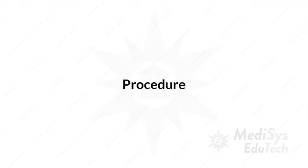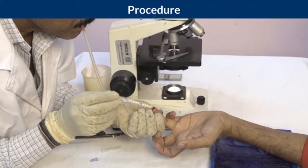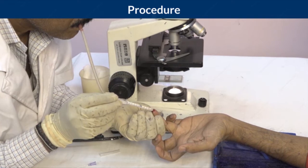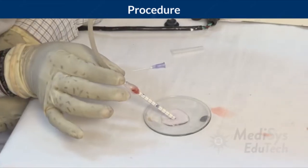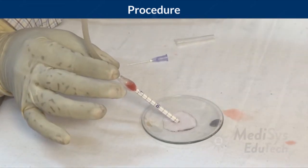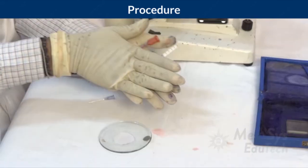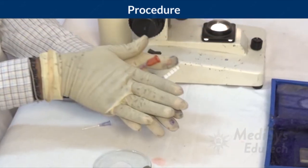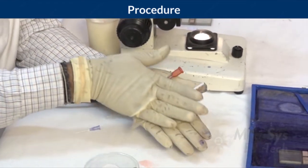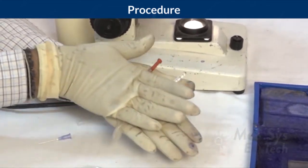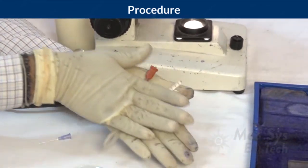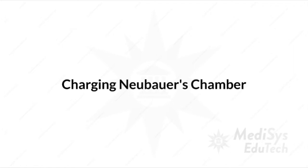Coming to the procedure: suck the blood up to the 0.5 mark of the RBC pipette, then immediately suck the diluting fluid up to the 1 in 1 mark. Blood in the pipette should be diluted quickly, otherwise blood clots in the pipette. Hold the pipette horizontally along with the rubber tube parallel to it in your palm. Gently roll it for 1 to 2 minutes, then keep it aside.